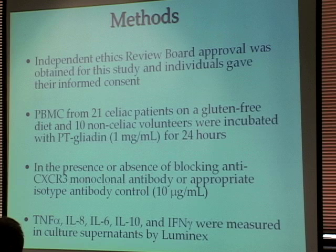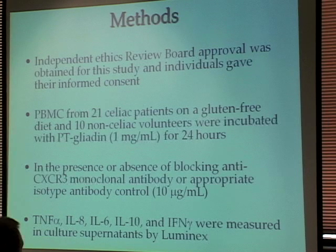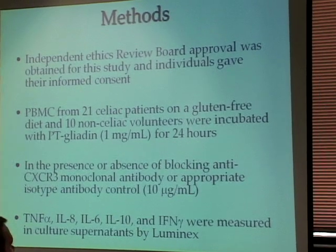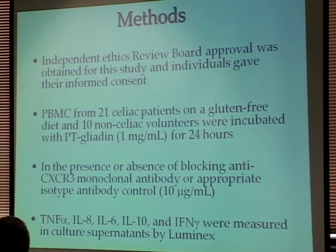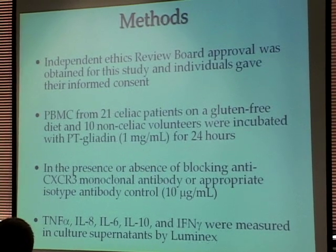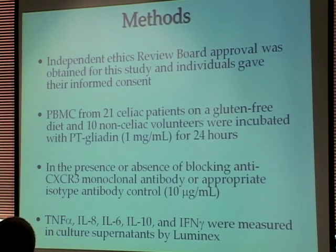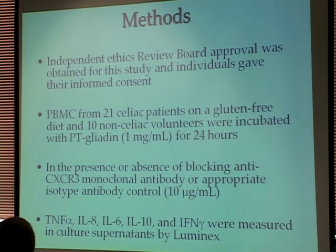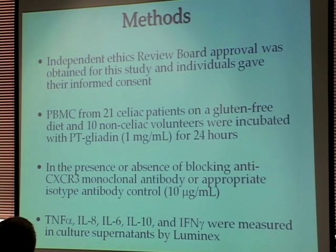Our methods required IRB approval from patients. We collected PBMCs from 21 different celiac disease patients who were on a gluten-free diet for at least six months, so they had no remnants of gliadin in their system, and PBMCs from 10 non-celiac healthy controls. Both sets of PBMCs were incubated in pepsin-trypsin-digested gliadin for 24 hours in the presence or absence of an anti-CXCR3 antibody, which served as a receptor block, as well as appropriate isotype controls. The supernatants were analyzed for six cytokines — TNF-alpha, IL-8, IL-6, IL-10, and interferon gamma — using Luminex cytokine assays, which are based on the principles of flow cytometry.